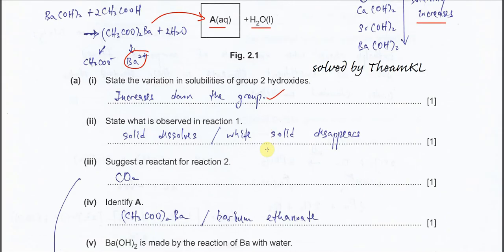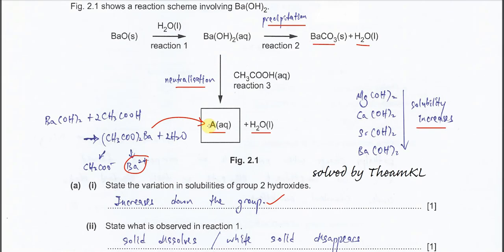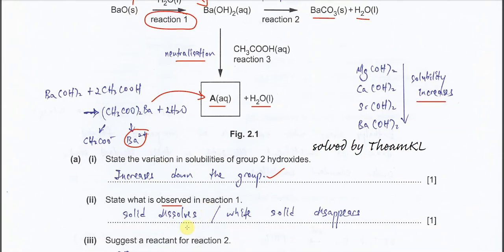Part 2: state what is observed in Reaction 1. Reaction 1 is barium oxide, which is a solid, reacting with H₂O to form a solution. The question says 'observed,' so we look at what we can see. From a solid, it now forms a solution — the solid dissolves. So you can say the solid dissolves, or the white solid disappears.